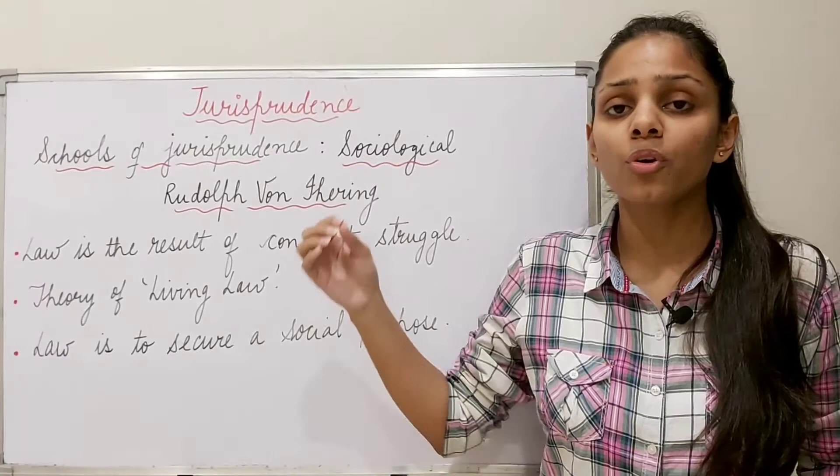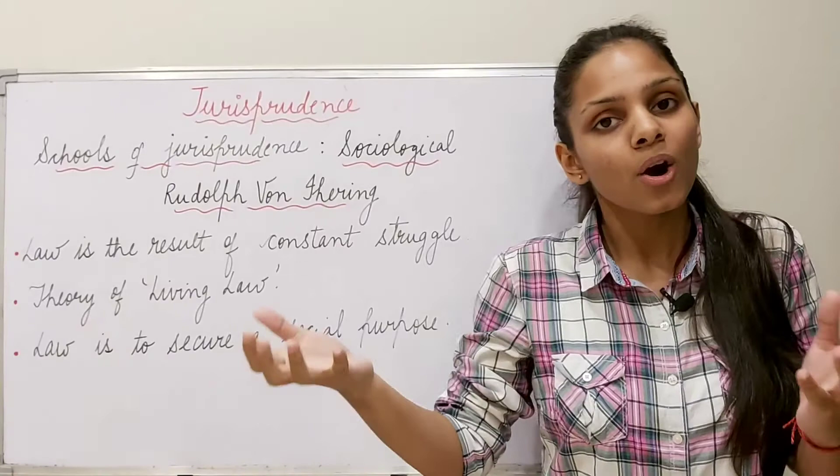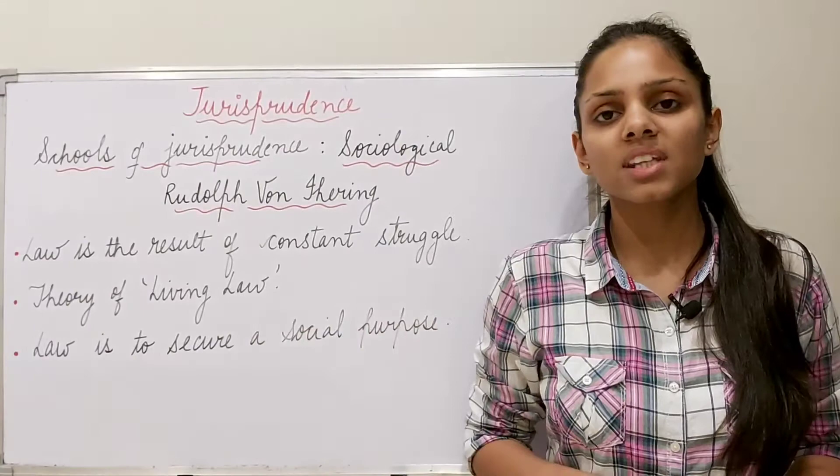I hope all of Rudolph von Ihering's theory is now clear to you — where he focused solely on law and correlated it to society, talking about jurisprudence of interests. I hope things are quite clear. If you have any doubts, please feel free to comment in the comment box. I'll be replying to all your doubts and queries. Till then, keep learning, keep shining, stay safe, and bye-bye.